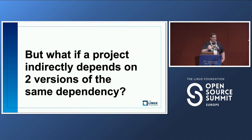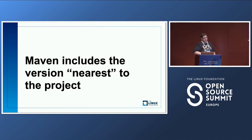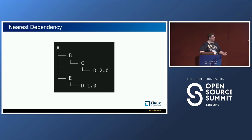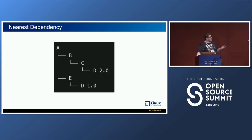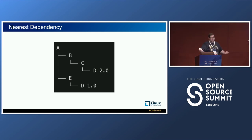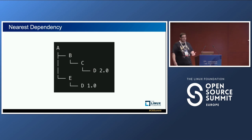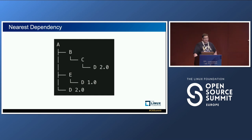What happens if a project depends on the same dependency twice with two different versions? Maven's solution is to include the nearest dependency. For example, if project A's dependency tree leads to dependency D at two different versions, Maven would include version 1.0 — the nearest one. This means if another dependency uses functionality from version 2.0, it won't have it, which can cause exceptions. If you want a specific version, you can explicitly declare it, and that's the version that will be used.